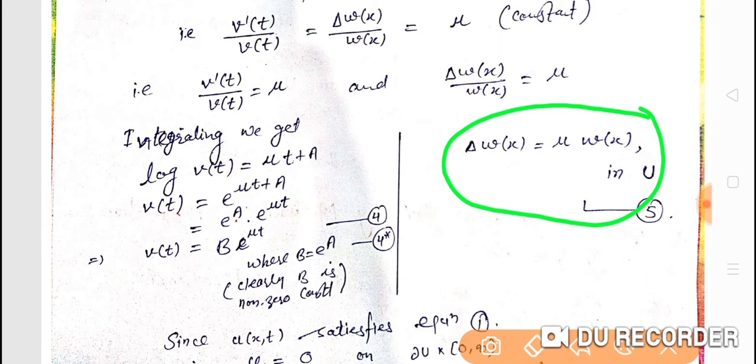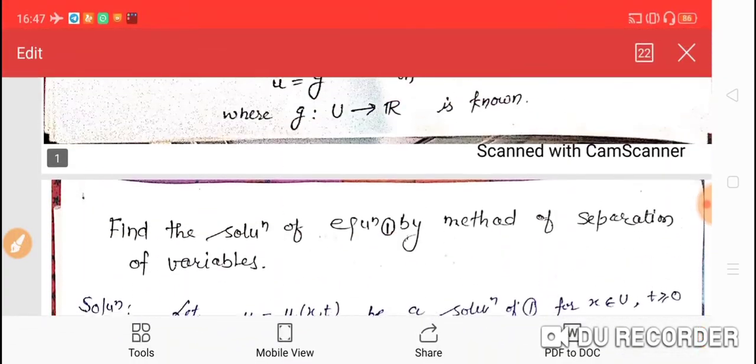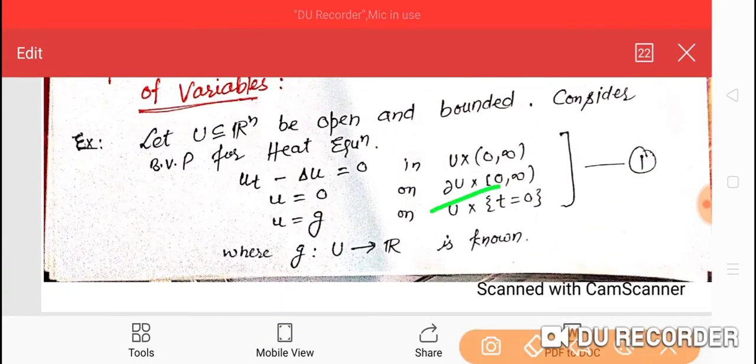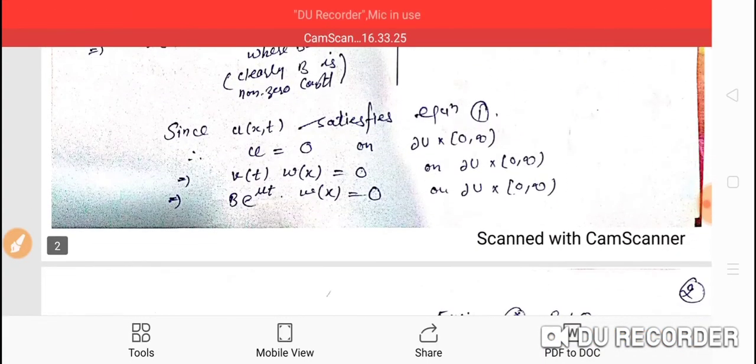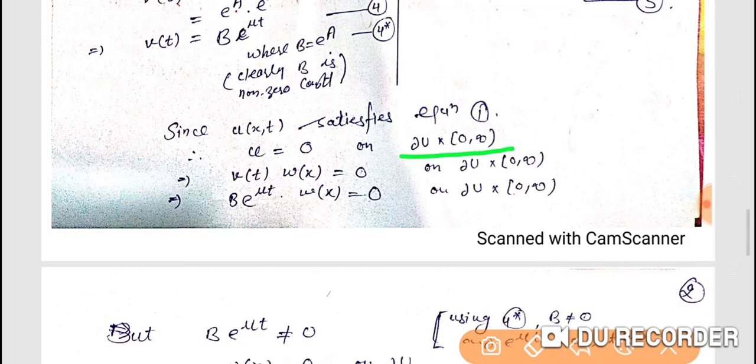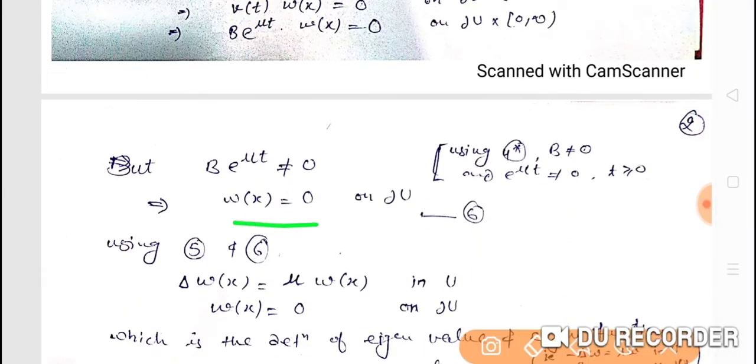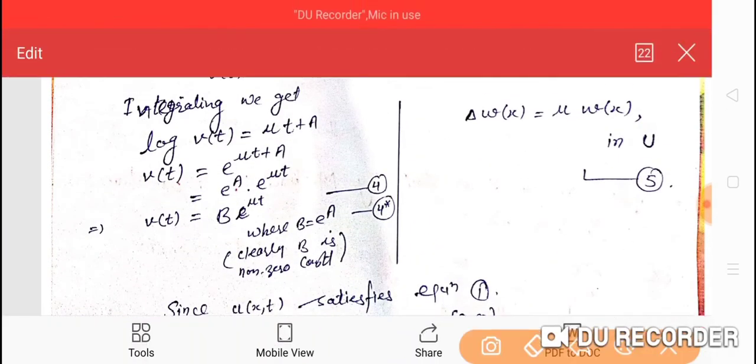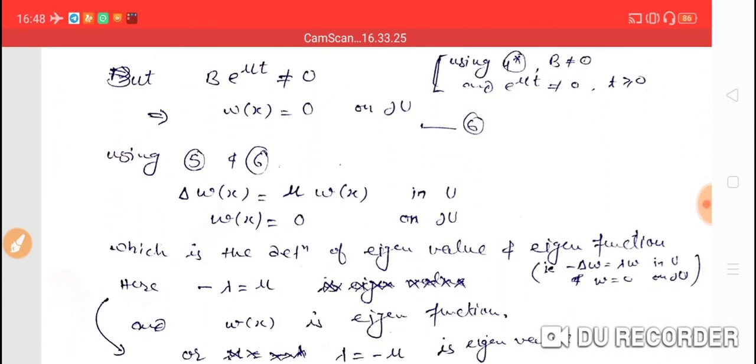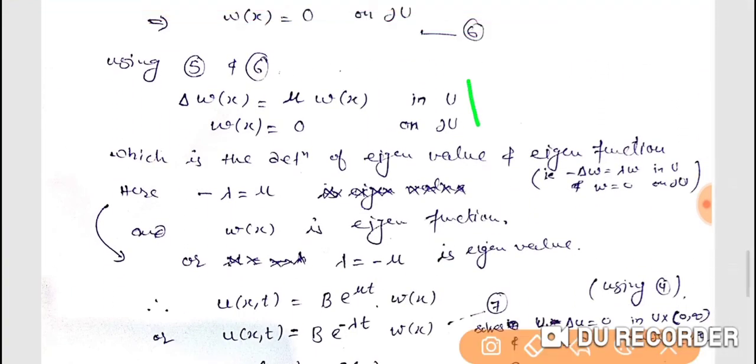Let's check the boundary condition. From the statement, u equals zero on the boundary cross zero to infinity. Since u equals v times w and v is non-zero (we showed b is non-zero), we must have w equals zero on the boundary. So delta w equals mu w in u and w equals zero on boundary. This satisfies the definition of eigenvalue and eigenfunction.